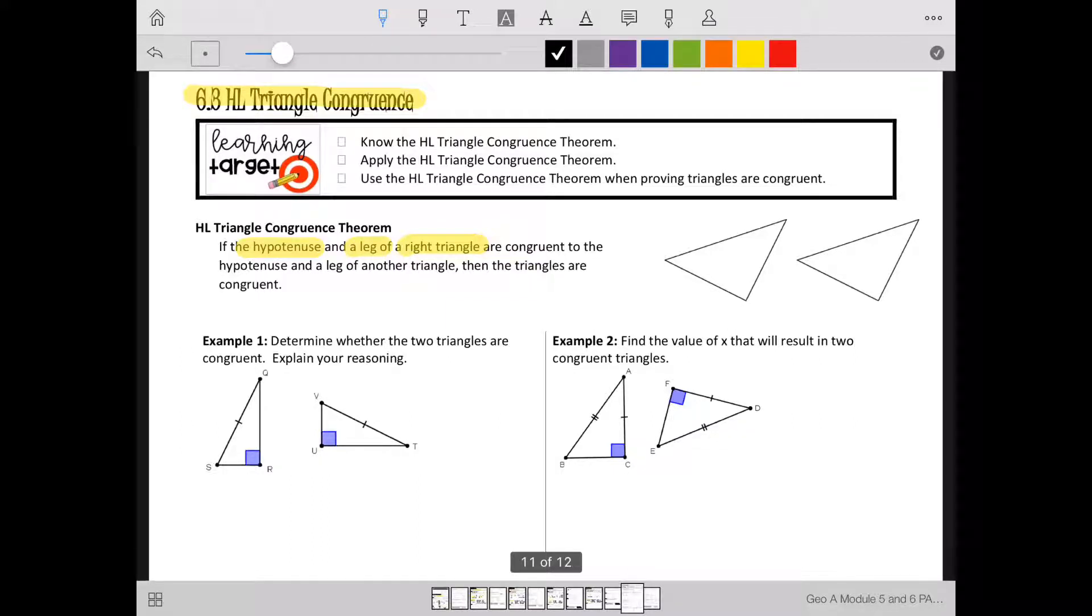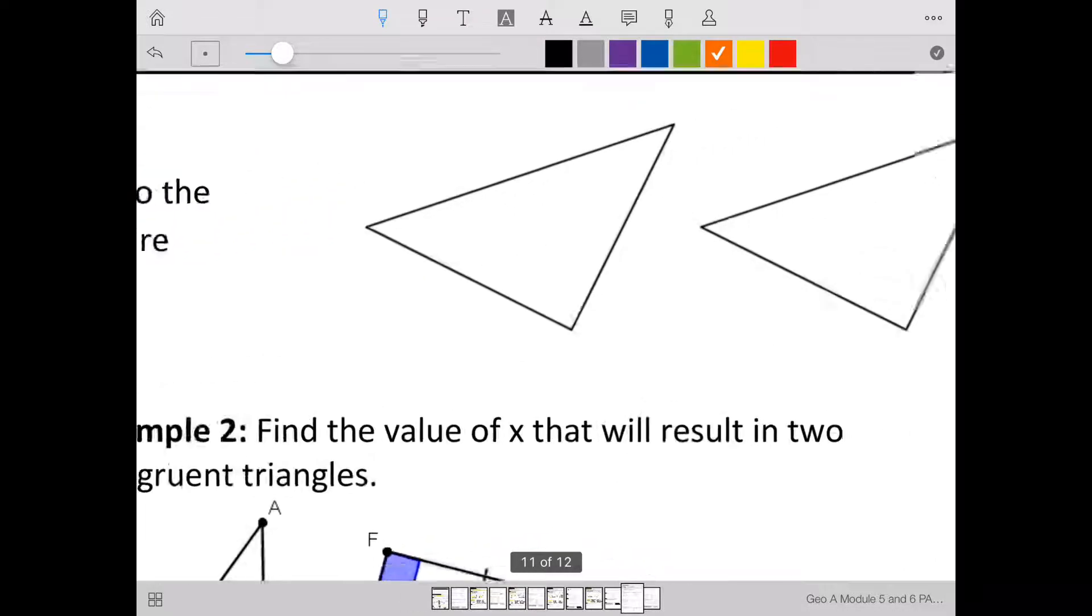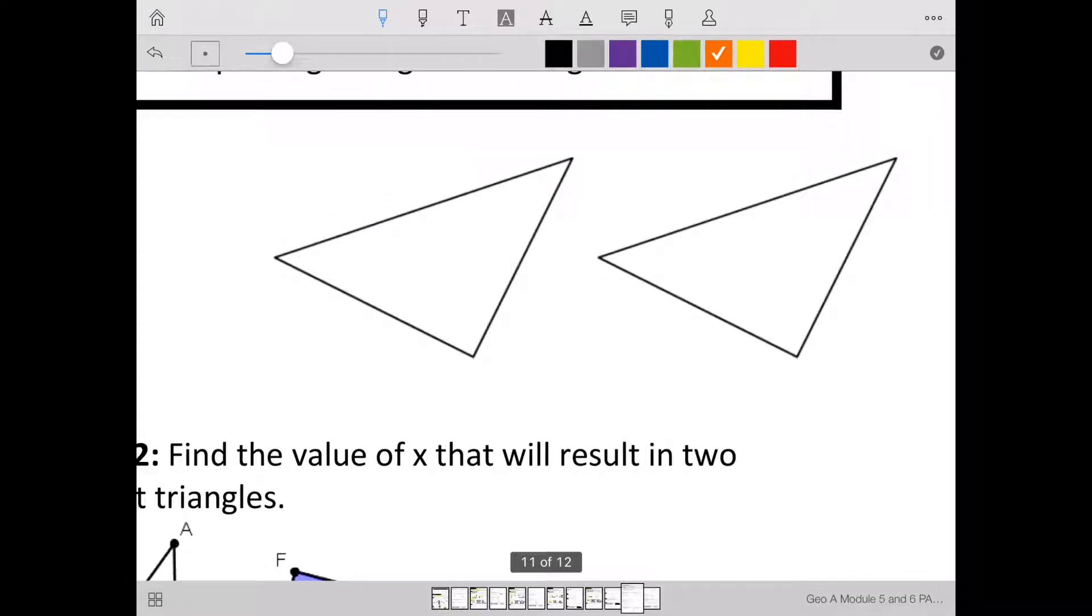One of the most important things you need to know about the HL Triangle Congruence Theorem is that it only works on right triangles. If I'm looking at this picture, the only way for us to know that these triangles are right triangles is if it has the little boxy symbol in the corner, or it is labeled 90 degrees. That's the only time we can assume triangles are right triangles, is when it's labeled.